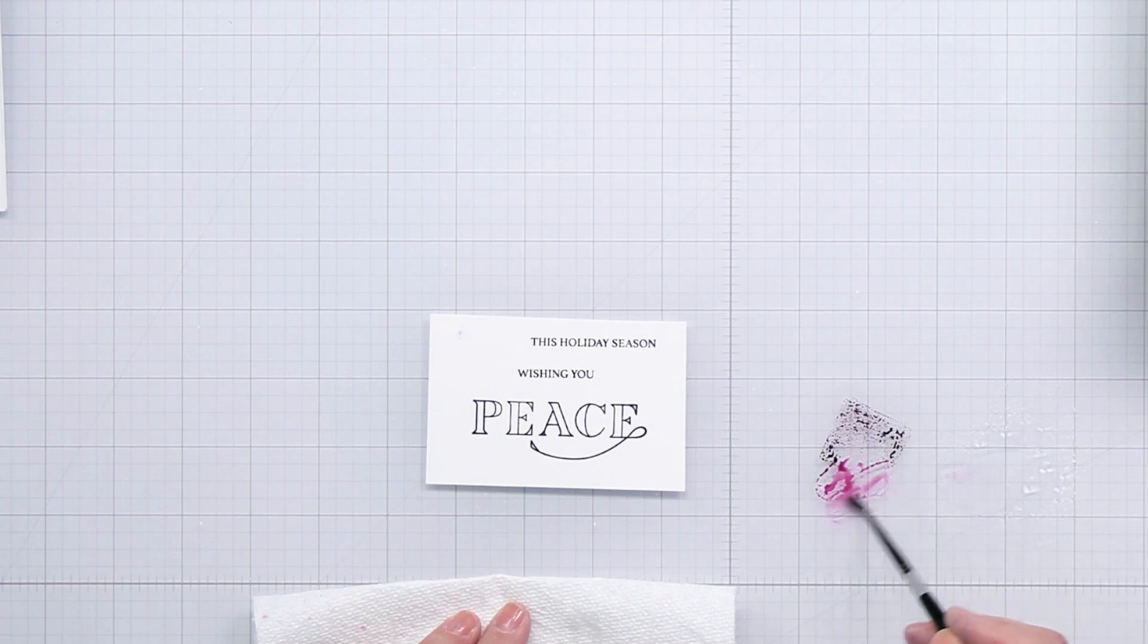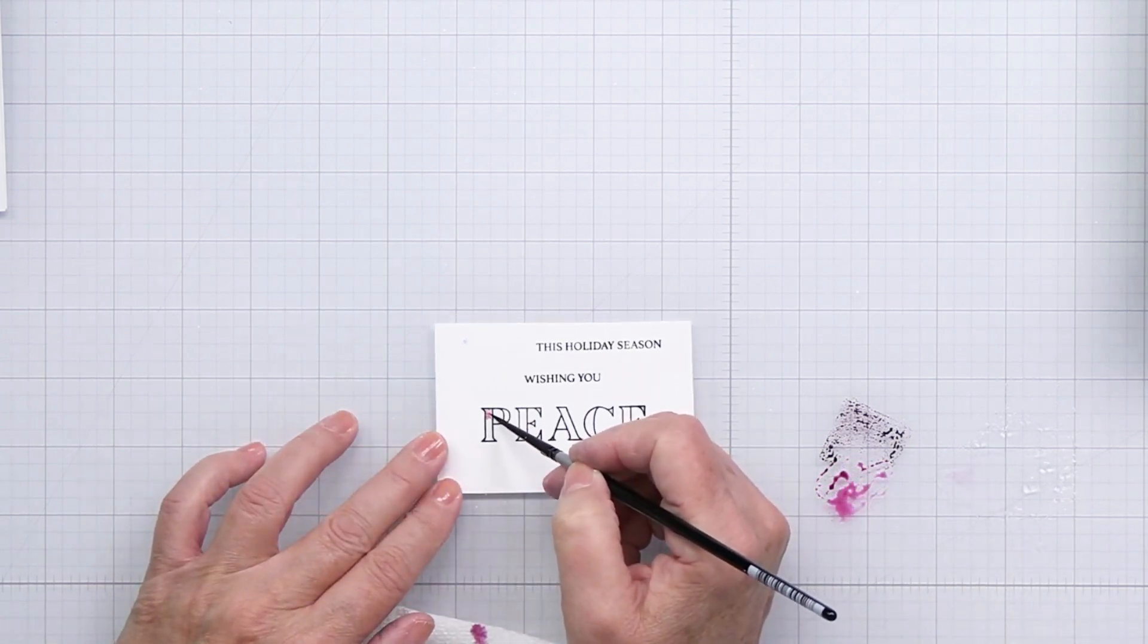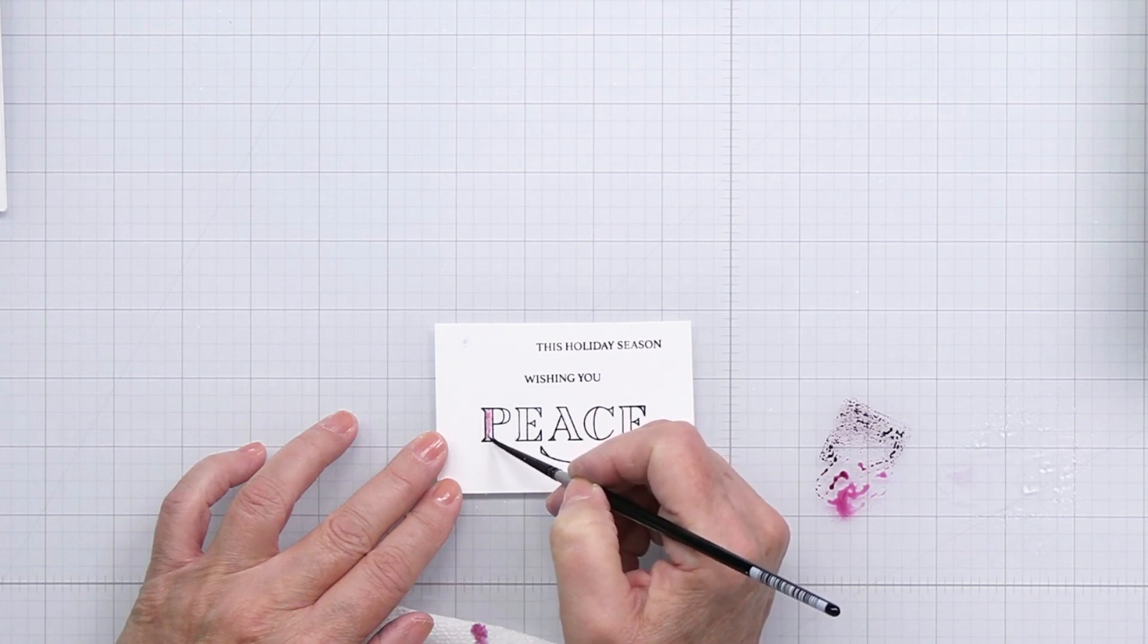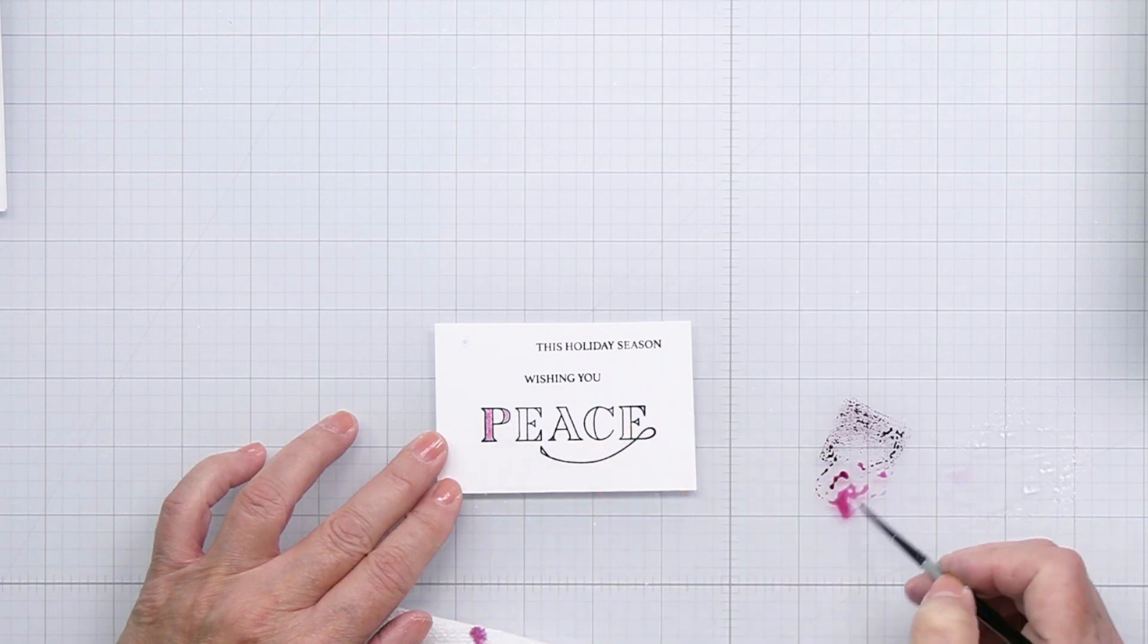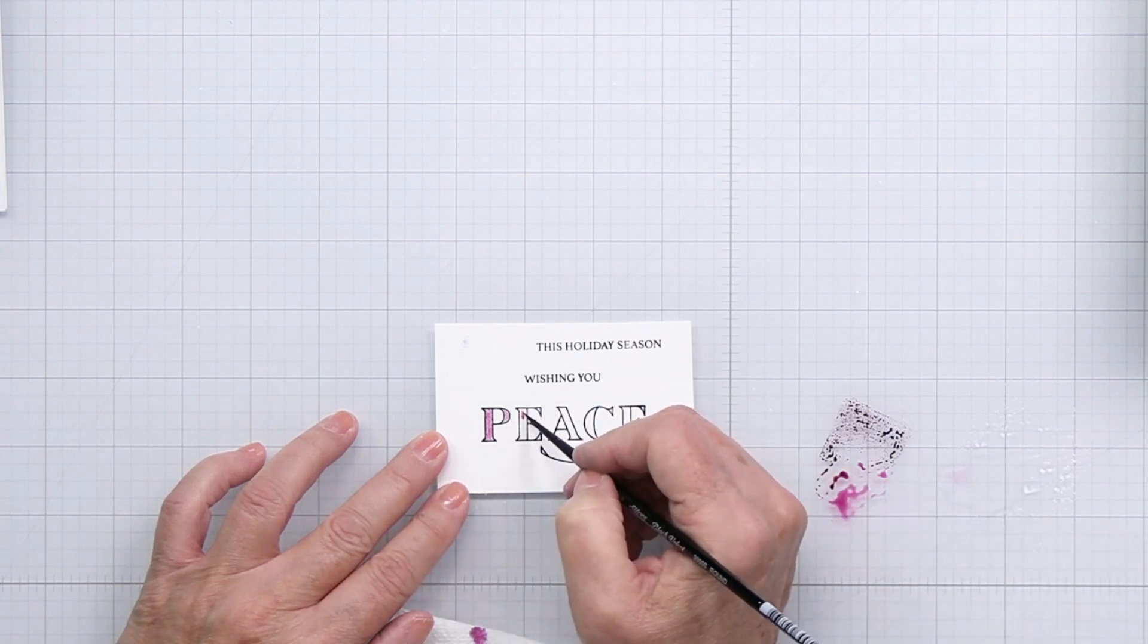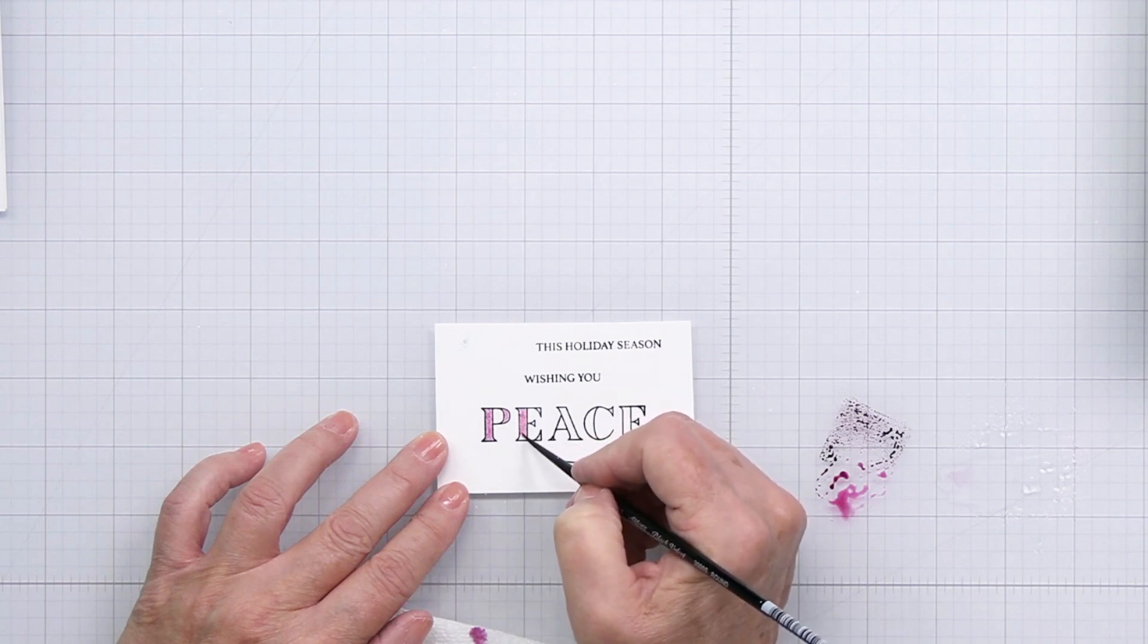Before I die cut those, I wanted to do a little bit of watercoloring in some of these areas on the word peace. In the open areas I'm going to use that Seedless Preserves ink cube again and a little bit of water and my watercolor brush to color in the open areas there, just to add a little bit of color to the sentiment as well.